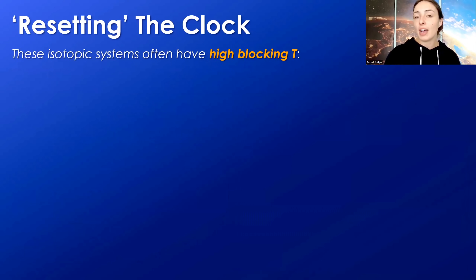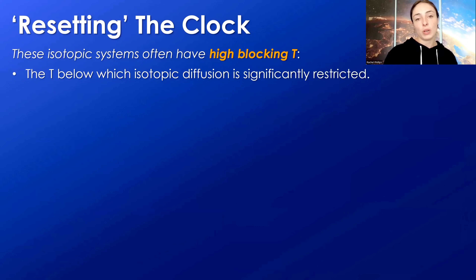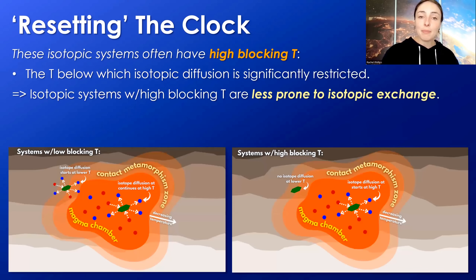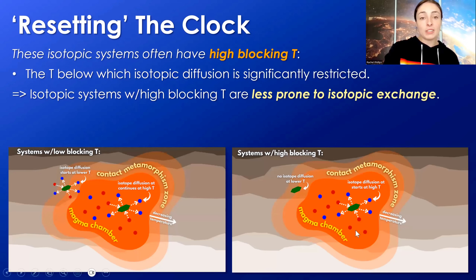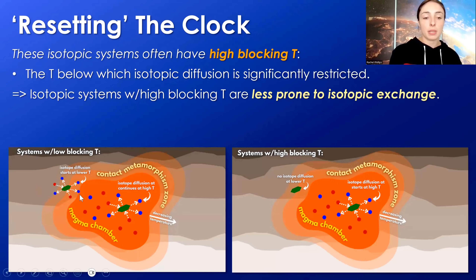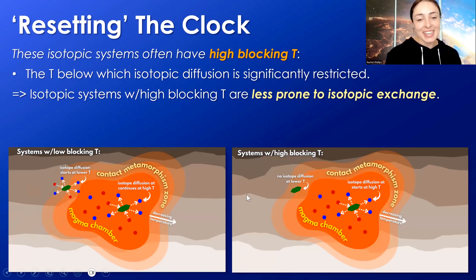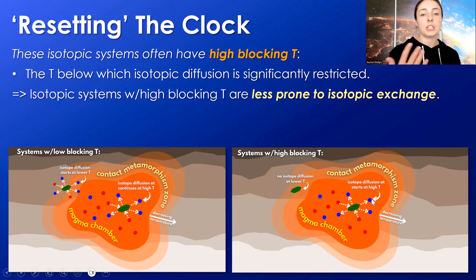Systems less prone to resetting have high blocking temperatures. The blocking temperature is the temperature below which isotopic diffusion is significantly restricted. Isotopic systems with high blocking temperature are less prone to isotopic exchange because it takes a higher temperature — like full melting rather than just metamorphism — to allow isotopic diffusion. In this diagram showing contact metamorphism around a magma chamber, systems with high blocking temperature don't allow isotopic diffusion in the metamorphic zone, but by the time they're fully melted, they do allow it.